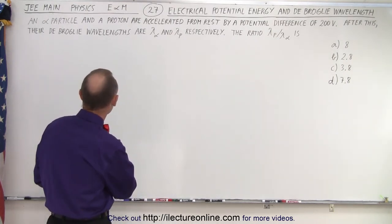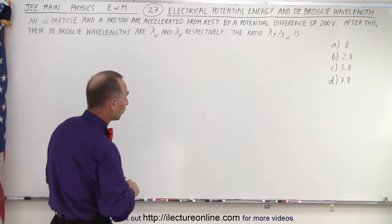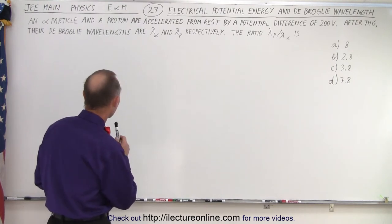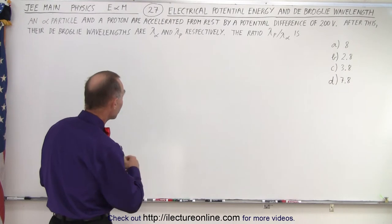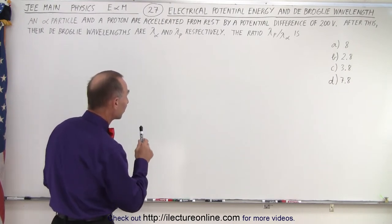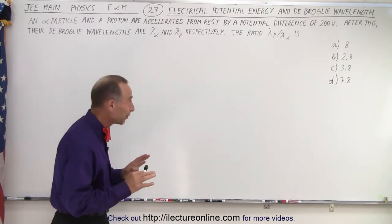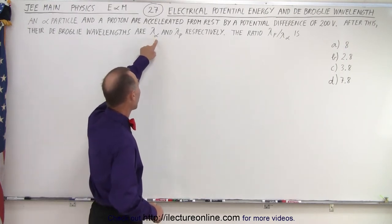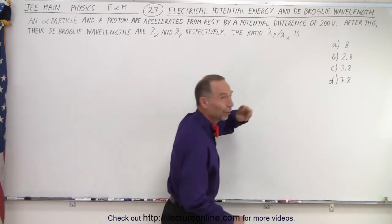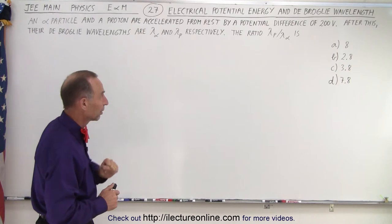An alpha particle and a proton are accelerated from rest by a potential difference of 200 volts. After this, their de Broglie wavelengths are lambda sub alpha and lambda sub p respectively. The ratio of lambda sub p to lambda sub alpha is one of four possible answers. We have to be careful here because the problem lists alpha first and then the proton, but it asks for the ratio in reverse order — that threw me for a loop, so you have to be careful about what they're looking for.